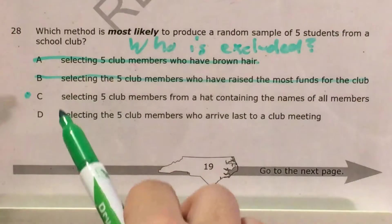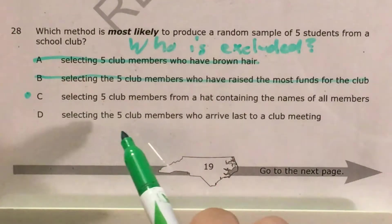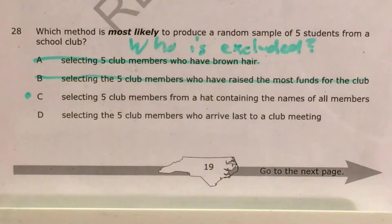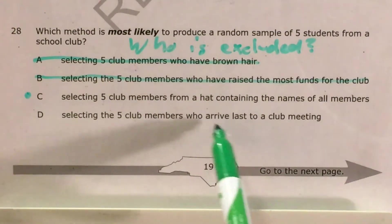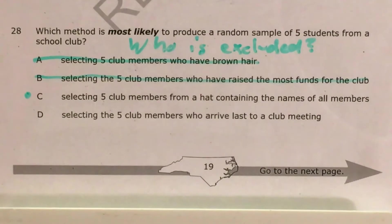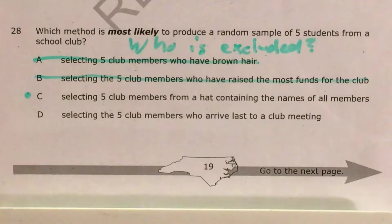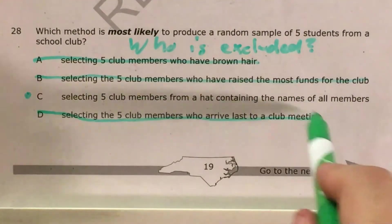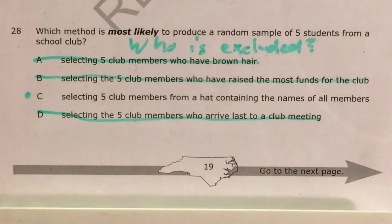Choice D says selecting the five club members who arrive last to a club meeting. Now this excludes the people who arrive first. If you arrive last, you likely maybe had something else to do or are not that committed to the club — you're just doing it to get an extracurricular on your record. So this would exclude the people who arrive first.